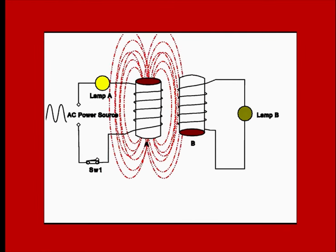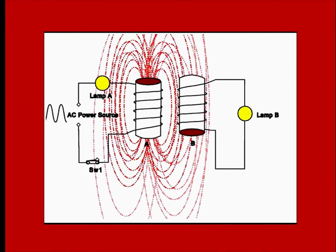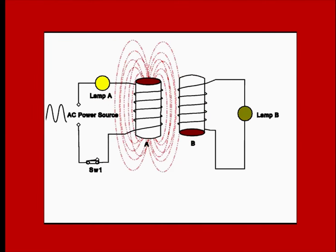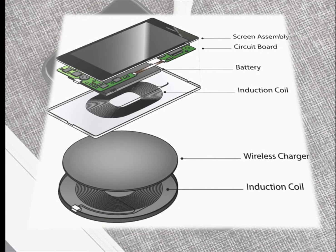Here, electricity got transferred wirelessly. This is known as induction. This same concept is used in wireless chargers. The wireless charger has an induction coil and the mobile phone also has an induction coil below the battery.